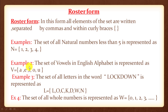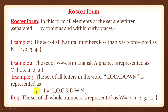Example 2: the set of vowels in the English alphabet is represented as B = {A, E, I, O, U}. Example 3: the set of all letters in the word 'lockdown' is represented as L = {L, O, C, K, D, W, N}.